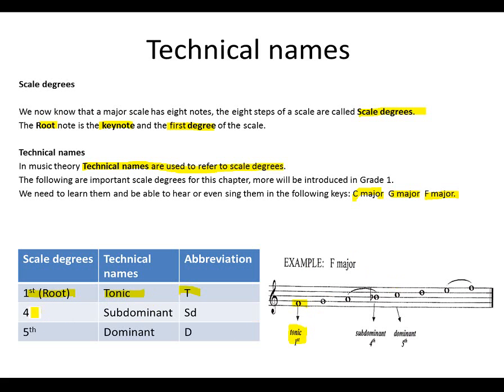Your fourth scale degree is a subdominant. Subdominant, SD as an abbreviation. 1, 2, 3, 4 - which is a B-flat. So the B-flat in F major scale is our subdominant. The fifth scale degree is called the dominant. We use the D to abbreviate it. It's found here.